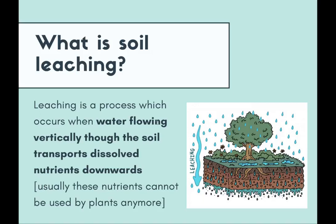Another question: what is soil leaching? Leaching is a process which occurs when water flowing vertically through the soil transports dissolved nutrients downwards. In this process, nutrients are dissolved in the water and transported downwards, usually away from the roots of trees and plants, such that the nutrients cannot be used by the plants anymore. So it's a process where nutrients are lost from the nutrient cycle.